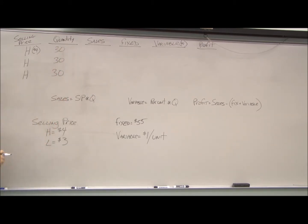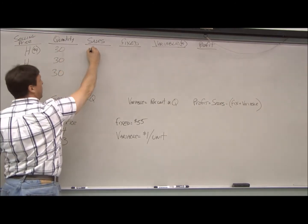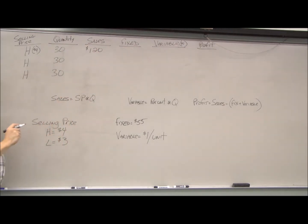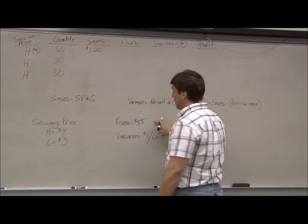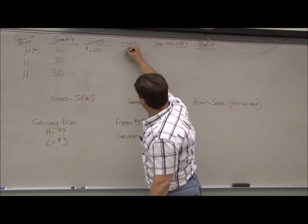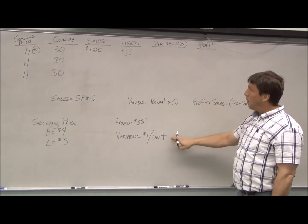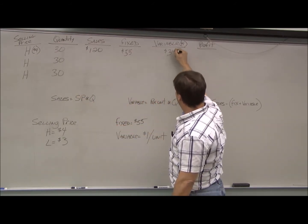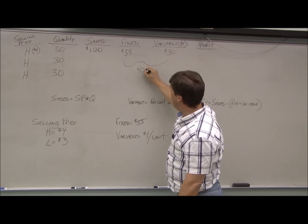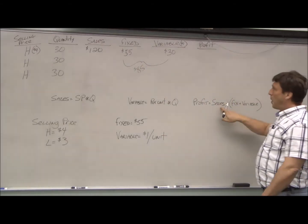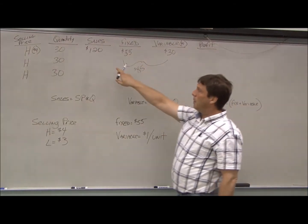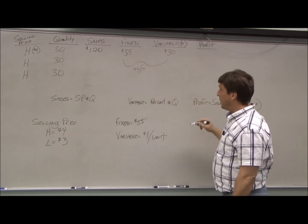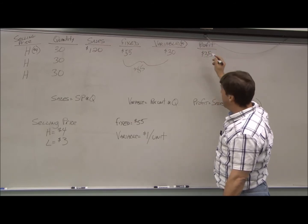Each company will have a quantity of 30 units. Their sales are the high selling price times 30, which equals $120 in sales. The fixed cost is $55. The variable is $1 per unit. With a quantity of 30, the variable cost is $30. Adding these together, we have $85 in costs. Our profit is sales minus costs: $120 minus $85 equals $35.